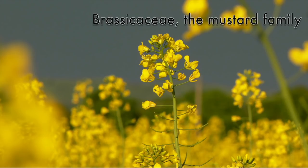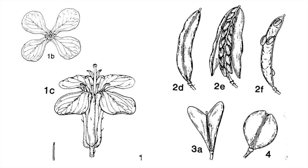Moving on to the Brassicaceae, the mustard family. Most dicot families have flowers with petals and sepals in groups of five, but the Brassicaceae has flowers arranged in groups of four. One of the older names for the mustard family is Cruciferae, meaning 'cross-bearing flowers,' because the four petals make a cross shape rather than a star shape. Here are a couple of examples of mustard flowers. The fruits are variable but typically some type of capsule called a silique or a silicle — they can be long and skinny, heart-shaped, or more round.